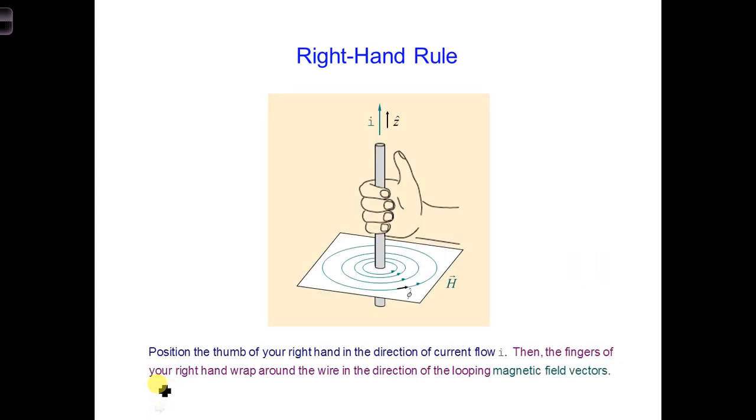Mr. Orsted found that magnetic fields follow the right-hand rule. If you place your thumb in the direction of the current, your fingers curl in the direction of the circulating magnetic fields.